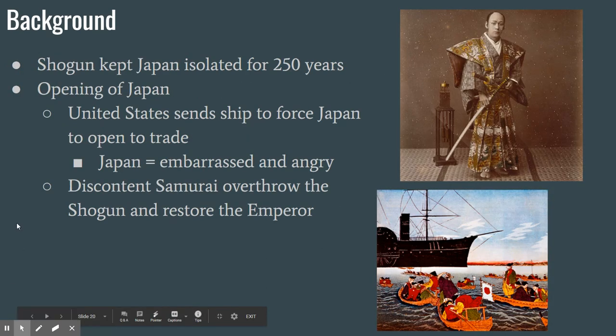Originally, the Shogun had kept Japan isolated from the rest of the world for 250 years, wanting no outside influences. As the West modernized and became more powerful, the United States wanted to open Japan to trade. The U.S. sent a ship and forced Japan to open up, threatening to bombard cities if they refused. This embarrassed the Japanese and made them angry. Just like China, they were taken advantage of — but the difference is the samurai overthrew the Shogun and put the emperor back in power.